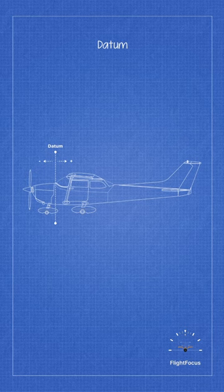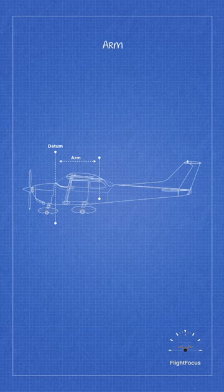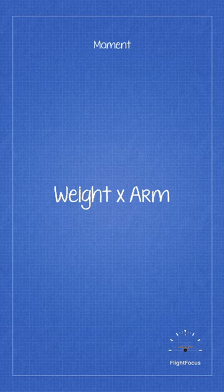Next is the arm, the horizontal distance from the datum to any point within the aircraft. Next is the moment, the product of the weight of an item and its arm.